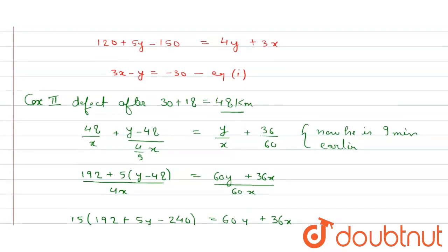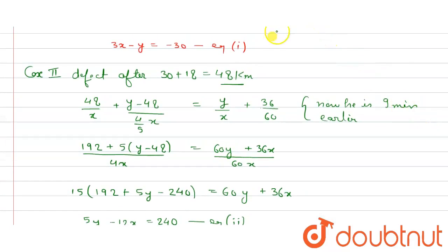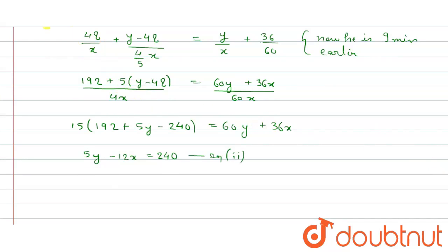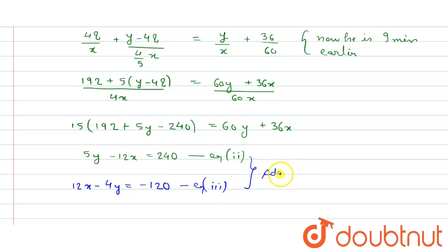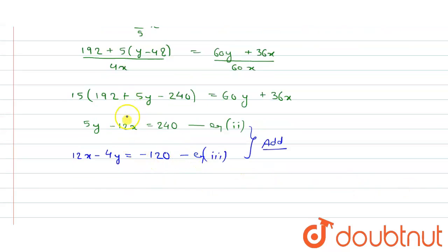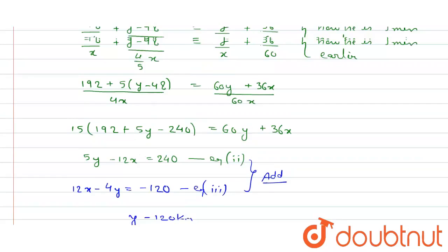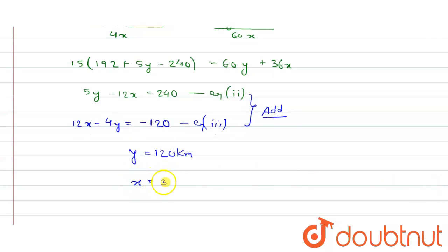So we have equation one: 3x − y = −30, and equation two: 5y − 12x = 240. We multiply equation one by 4 to get 12x − 4y = −120. Adding this to equation two, −12x and 12x cancel out, and we get y = 120 kilometers. Substituting back, we get x = 30 kilometers per hour.